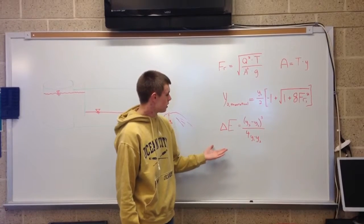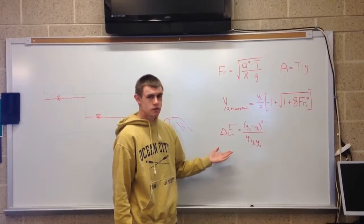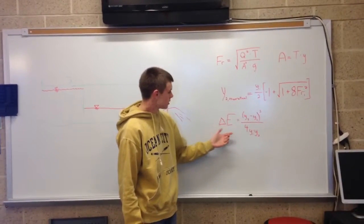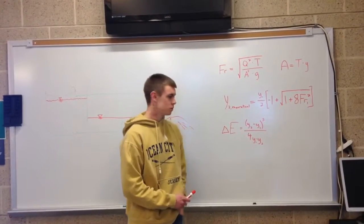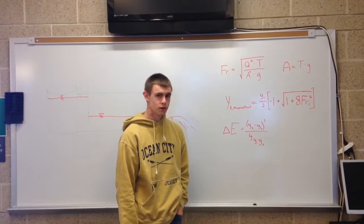And the energy dissipation, you also need that to classify the jump. It's characterized by this equation: (y2 minus y1) cubed over 4 times y1 times y2.